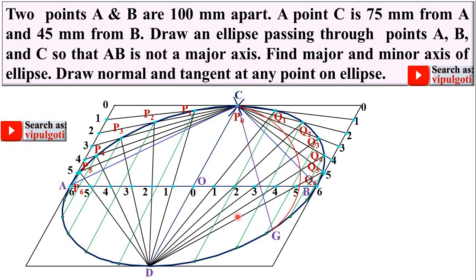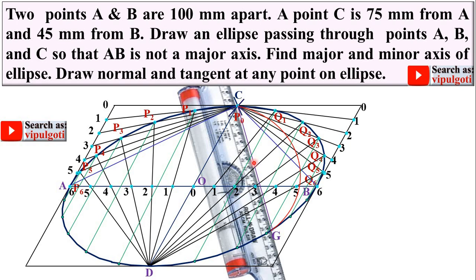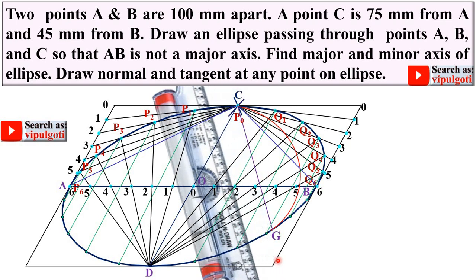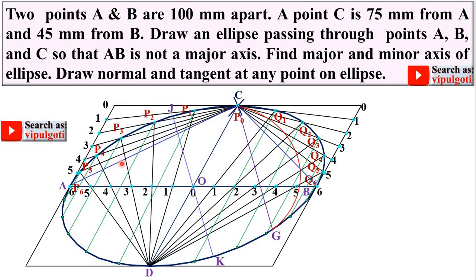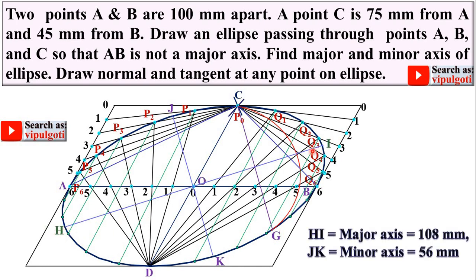Next very important point: draw the line which is parallel to CG and must pass through this O point, which will intersect this ellipse at these two points. Give the name as J and K. Now draw the line perpendicular to this JK and must pass through this O point. So here you can say HI is the major axis and JK is the minor axis.